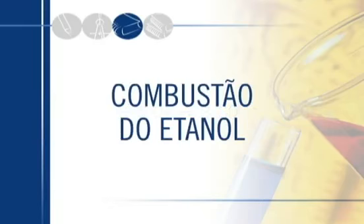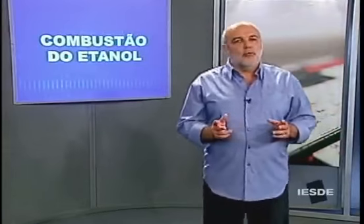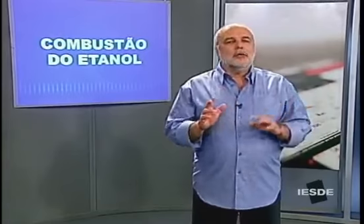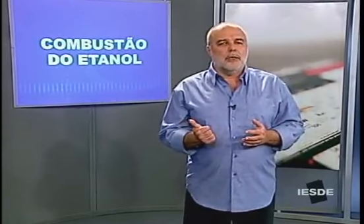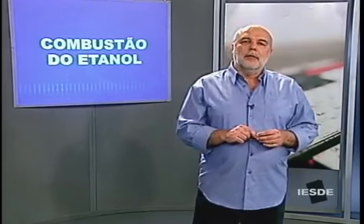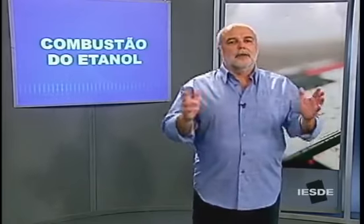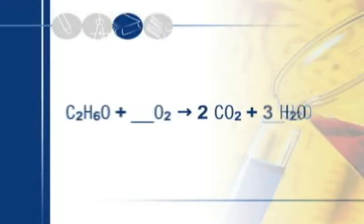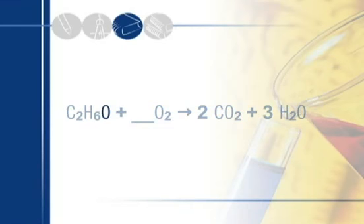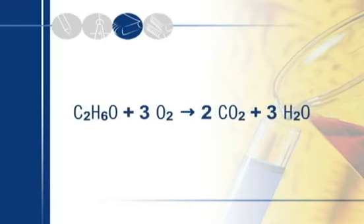Vamos olhar agora a combustão do etanol. Etanol é o álcool comum, muito usado como combustível. Etanol: ete são 2 carbonos, C2H6, composto saturado mais o oxigênio da hidroxila. Logo a fórmula é C2H6O. Temos 2 carbonos, consequentemente 2 de CO2; 6 hidrogênios, consequentemente 3 de água. Contabilizando os oxigênios: 4 no CO2 mais 3 na água, total de 7. Já tem 1 no etanol, então faltam 6, consequentemente 3 de O2. A equação está perfeitamente balanceada.